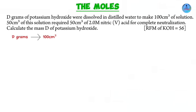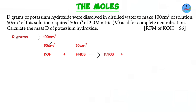From the information provided, I'm going to summarize it in a way that makes it easier to process. Number one, we have D grams of potassium hydroxide — an unknown mass dissolved in water and the solution made up to 100 cubic centimeters. Now out of this 100 cubic centimeters, 50 cubic centimeters was taken and reacted with nitric acid. We know the volume of nitric acid, 50 cubic centimeters, and its molarity of 2. This is a neutralization reaction where an acid and a base react to form a salt and water.